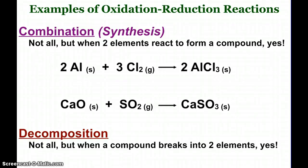For example here, combination. Not all of them are oxidation reduction. But when you have two elements reacting to form a compound, yes. Because both of your elements have an oxidation number of zero. And so they change when they go into a compound. Aluminum, in this case, chlorine is always a minus one oxidation number. And so the aluminum must be plus three. And so we can see that aluminum lost three electrons. And the chlorine gained one.